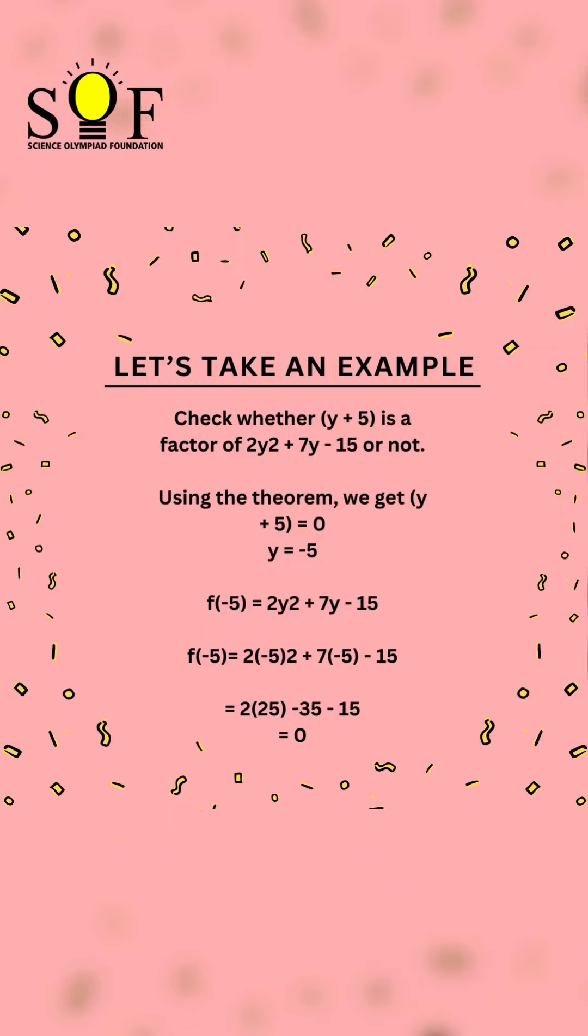Let us take an example. Check whether (y + 5) is a factor of 2y² + 7y - 15 or not. Using the theorem, we get y + 5 = 0, where y = -5. f(-5) = 2y² + 7y - 15.